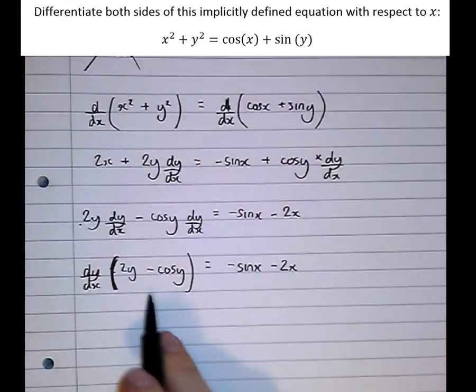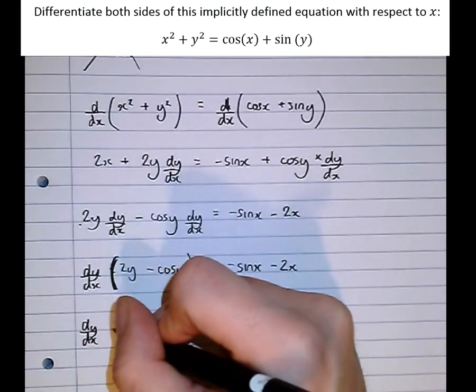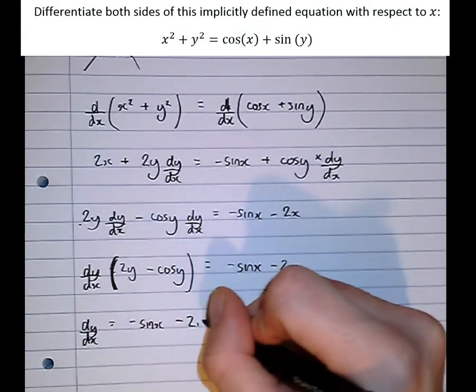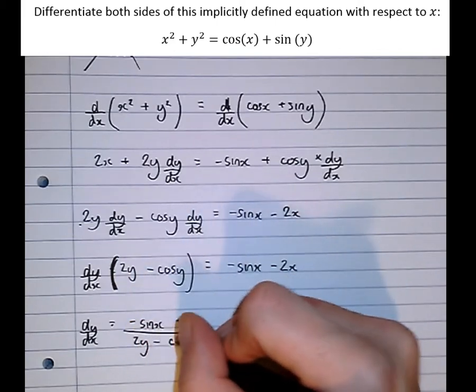Then divide by 2y minus cos(y), I get dy/dx equals minus sin(x) minus 2x over 2y minus cos(y).